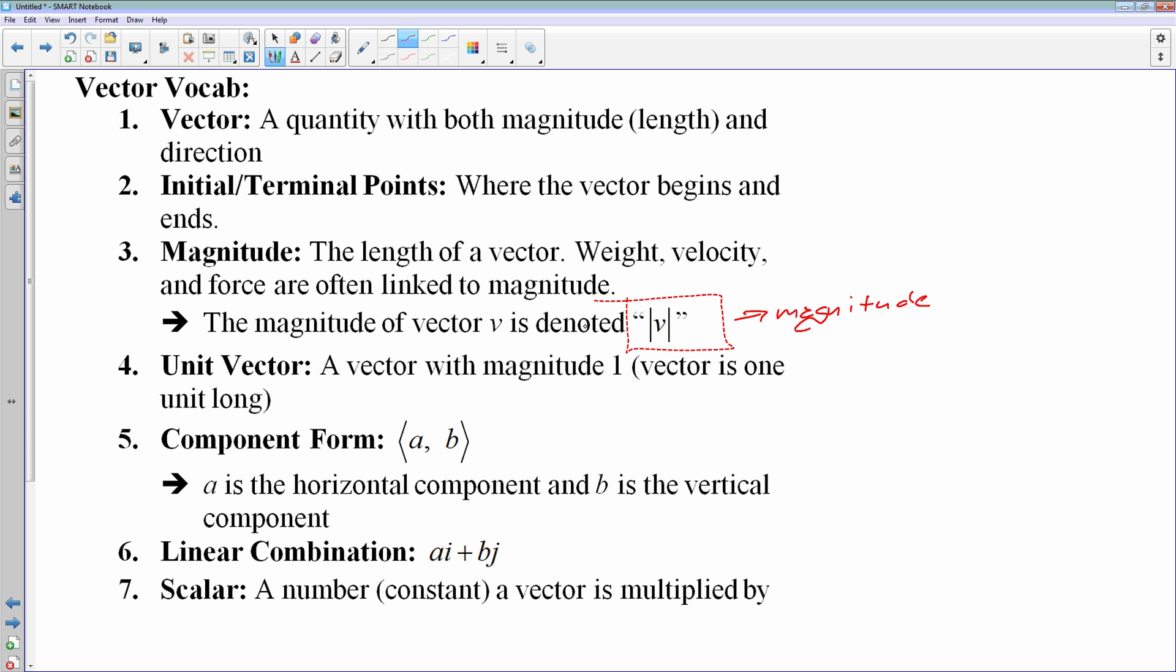The unit circle has a radius of 1. The unit vector has a weight of 1. This is called component form. This is called linear combination form. And then we have something called a scalar, which is simply a number that a vector is multiplied by.